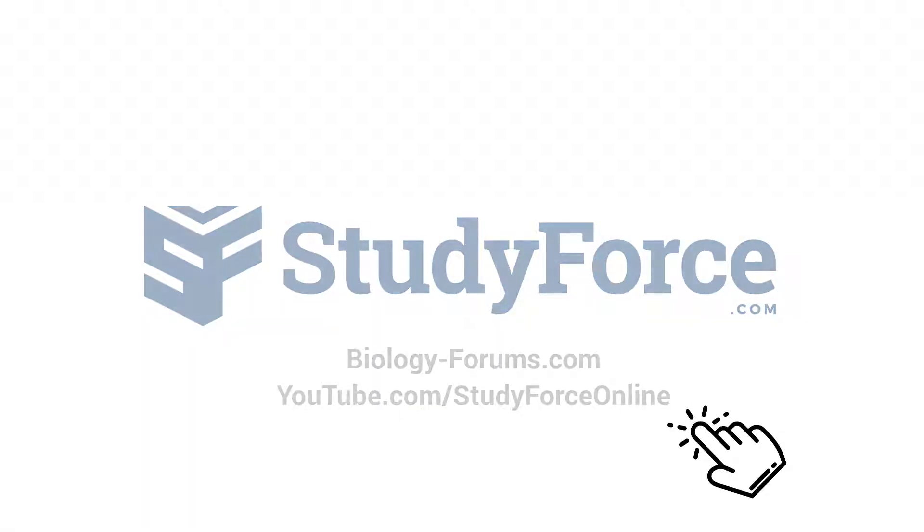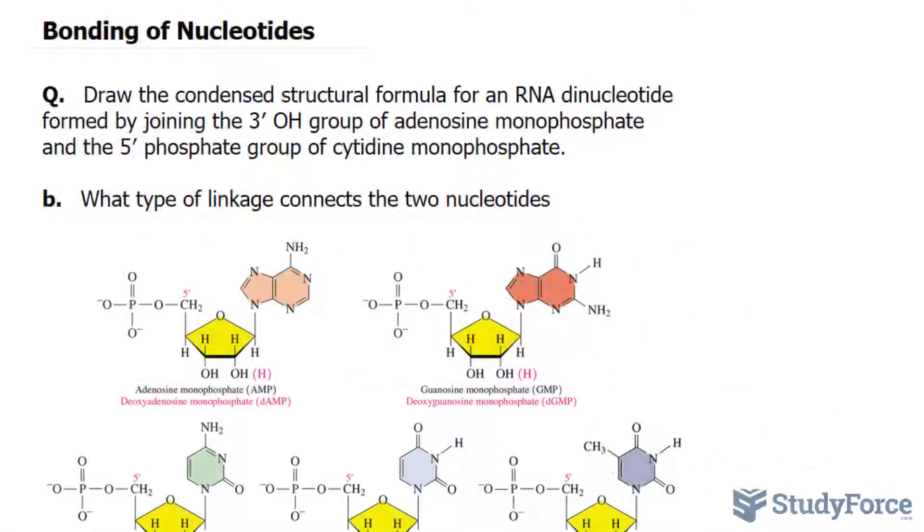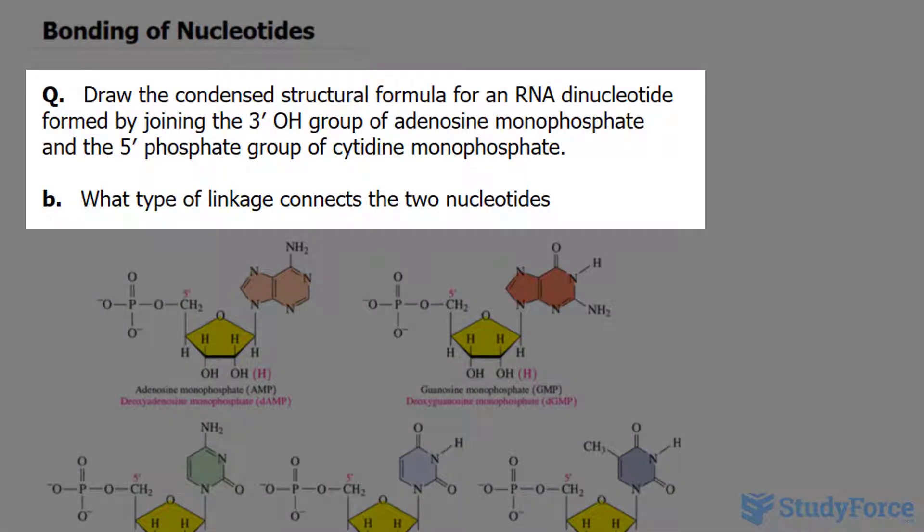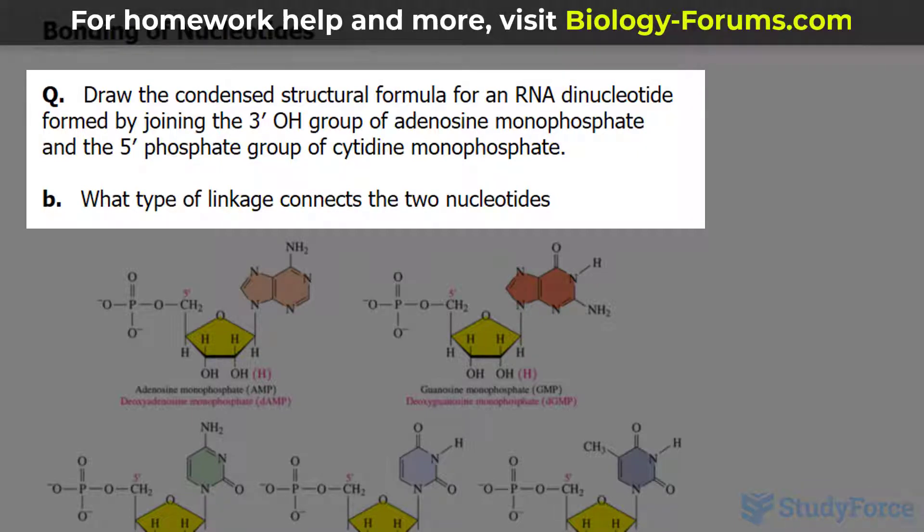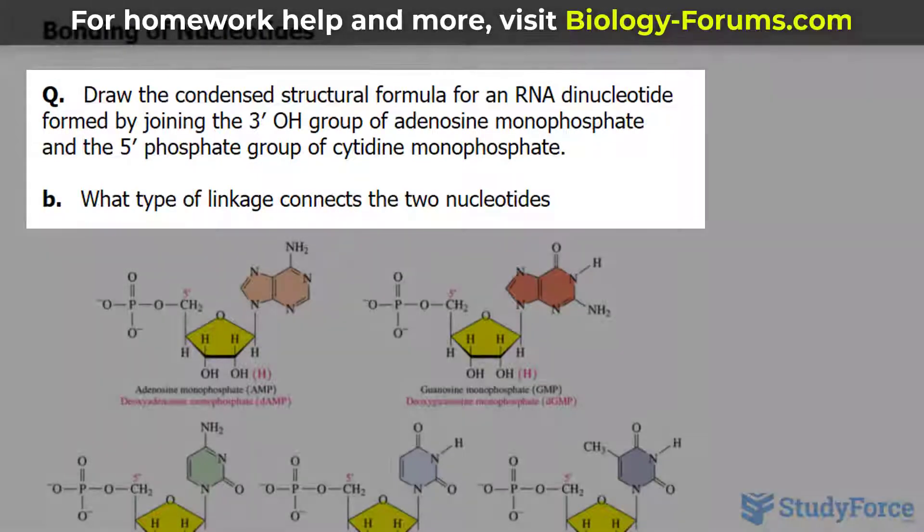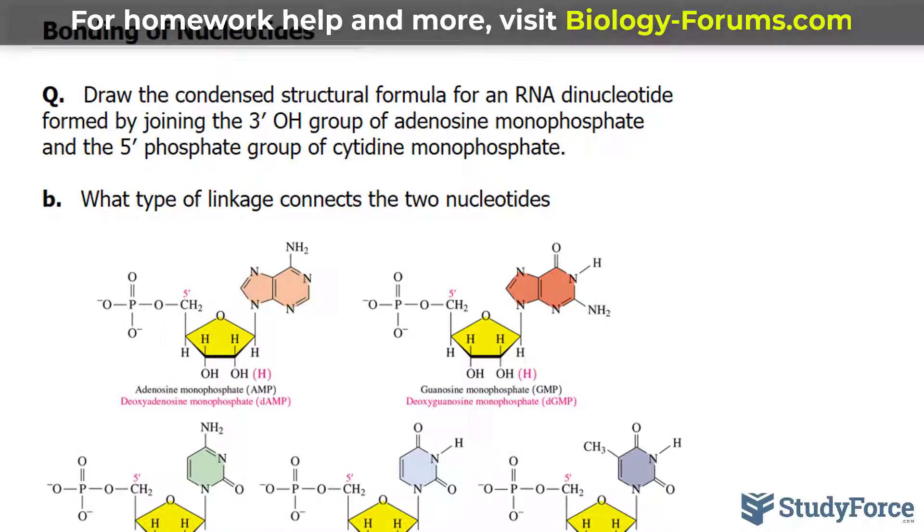In this lesson, we'll be discussing the bonding of nucleotides and learn how to draw nucleotides. The question reads: draw the condensed structural formula for an RNA dinucleotide formed by joining the 3' OH group of adenosine monophosphate and the 5' phosphate group of cytidine monophosphate.